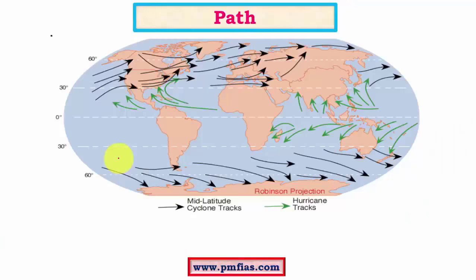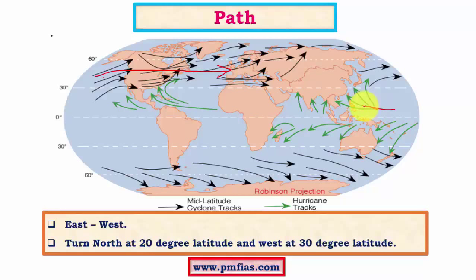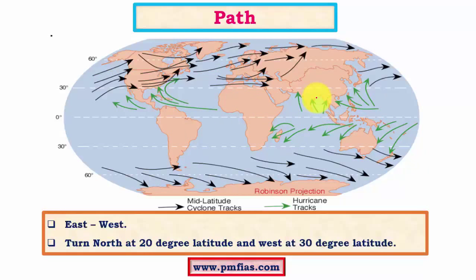Regarding path, temperate cyclones are influenced by jet streams, which flow west to east, so temperate cyclones also generally move from west to east. Tropical cyclones show more complex behavior: in the western Pacific and western Atlantic, they move east to west below 20 degrees latitude, then turn northward between 20 and 25 degrees, and finally west to east above 25–30 degrees — following a parabolic path. In the Indian Ocean, monsoon winds influence their track differently.